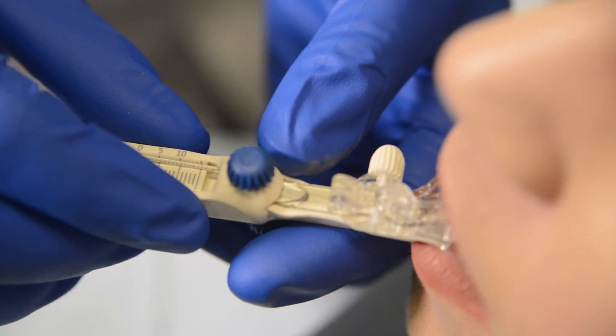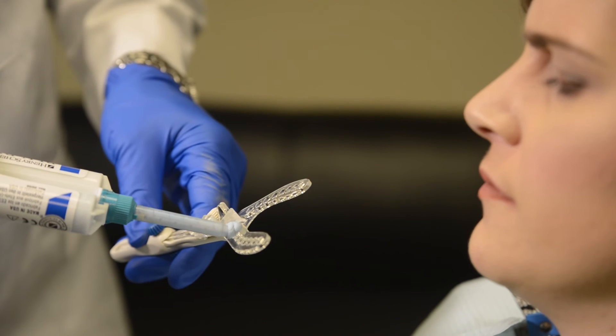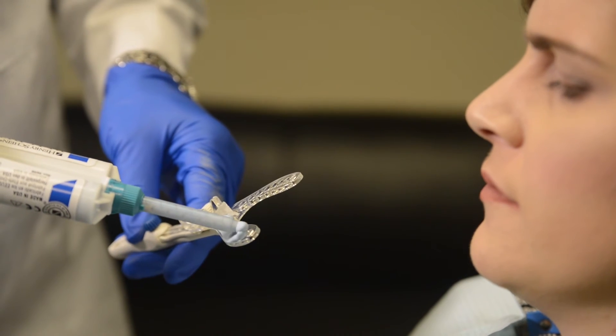Remove Somgage from mouth and secure at desired starting position. Load registration medium onto bite fork.